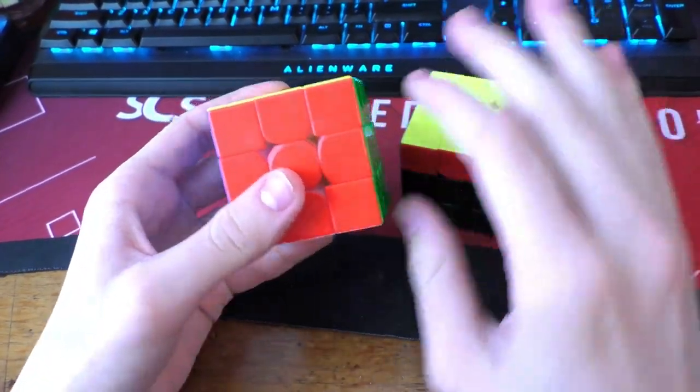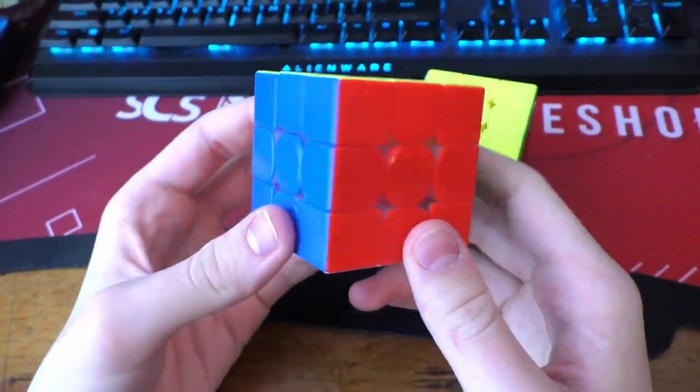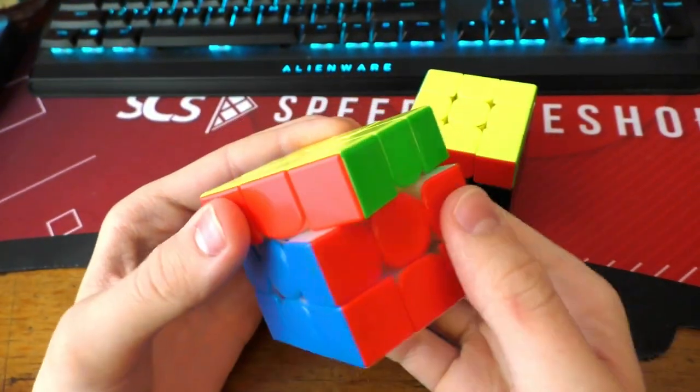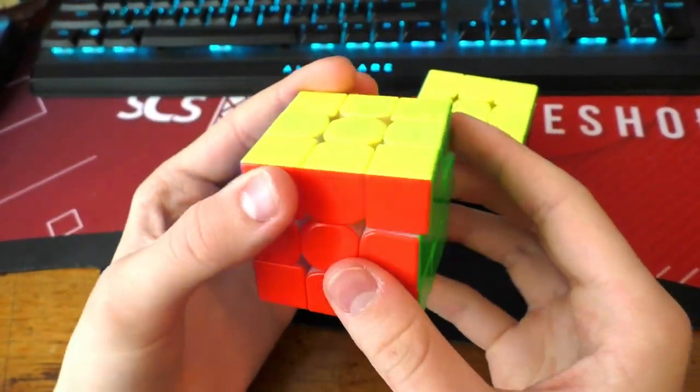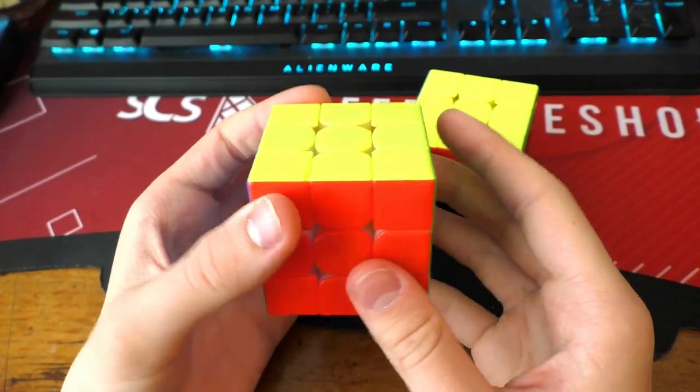This is why we can't have nice things. What am I talking about exactly? I'm talking about freaking F2L. The fact that we have to preserve F2L has ruined so many good algorithms out there.